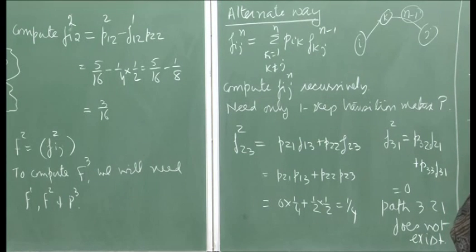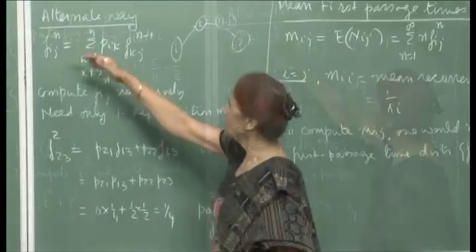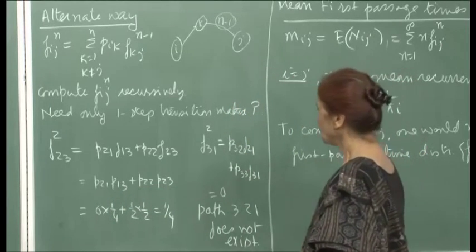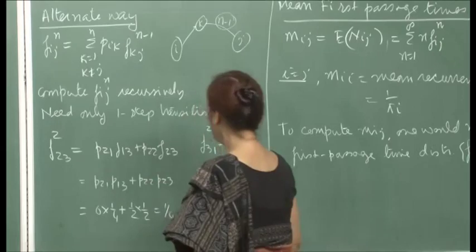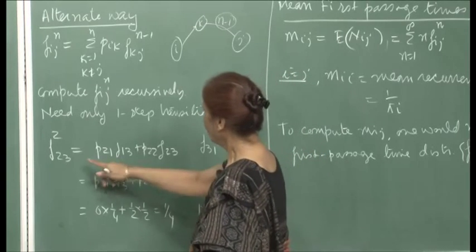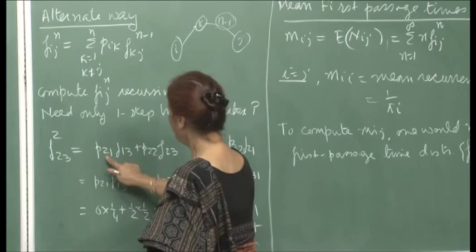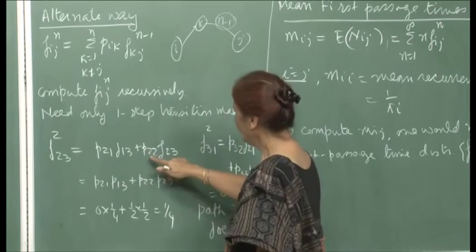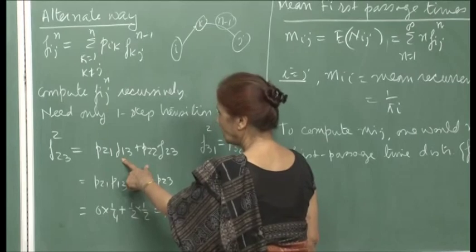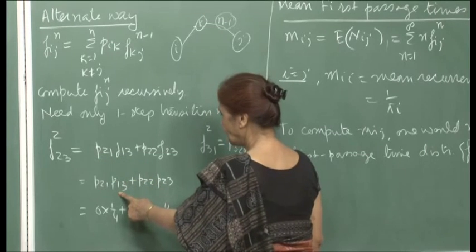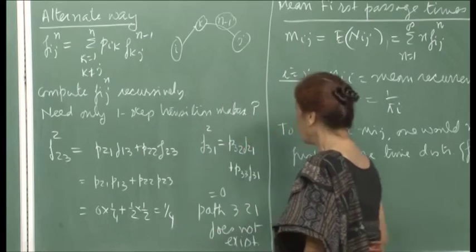To compute f_{2,3}(2): since k cannot be 3, k can take values 1 and 2. So f_{2,3}(2) = p_{2,1} times f_{1,3}(1) plus p_{2,2} times f_{2,3}(1). Since f_{1,3}(1) = p_{1,3} and f_{2,3}(1) = p_{2,3}, substituting values from matrix p gives the result. For f_{3,1}(2): k cannot be 1, so k can be 2 and 3. This gives p_{3,2} times f_{2,1}(1) plus p_{3,3} times f_{3,1}(1). Since p_{2,1} = 0 and p_{3,3} = 0, f_{3,1}(2) = 0, meaning you cannot reach state 1 from state 3 for the first time in two steps.